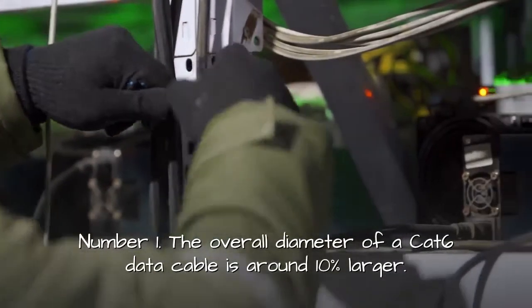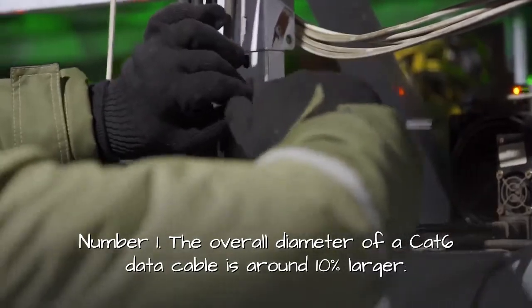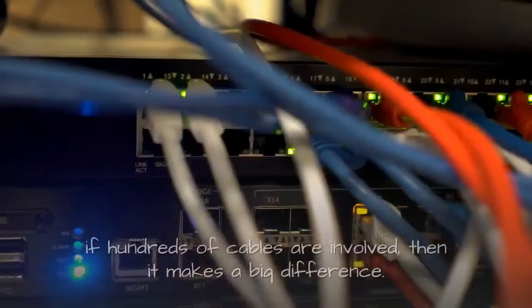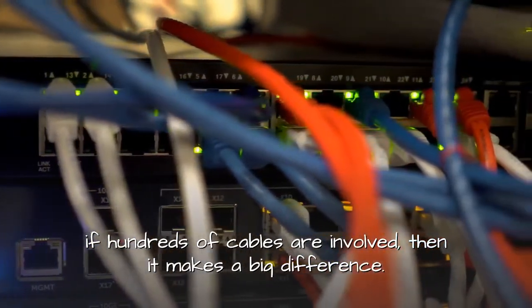Number 1: The overall diameter of a CAT6 data cable is around 10% larger. Although this isn't a lot for a single cable, if hundreds of cables are involved, then it makes a big difference.